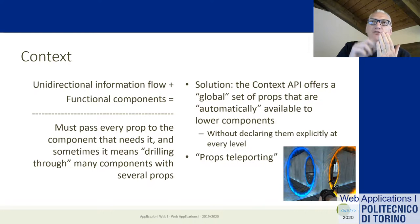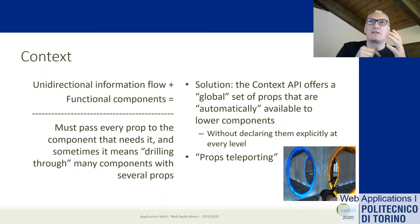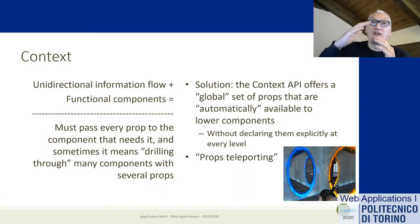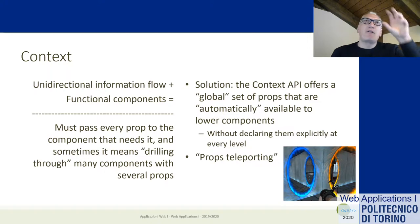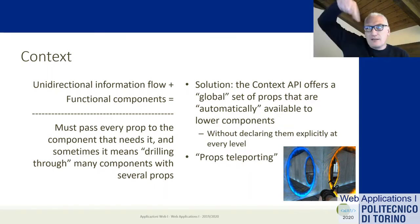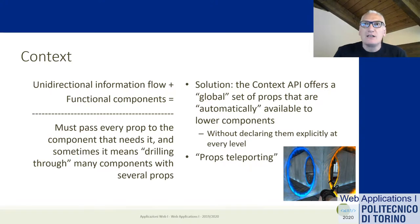Combined with unidirectional information flow, properties can only come from the component above. The only way to modify a component's behavior is having the parent pass a property. If a high-level component has information that a component five or six levels down needs, that property must be copied through all the intermediate container components — we need to drill through all the layers to reach the only component that really needs the information.